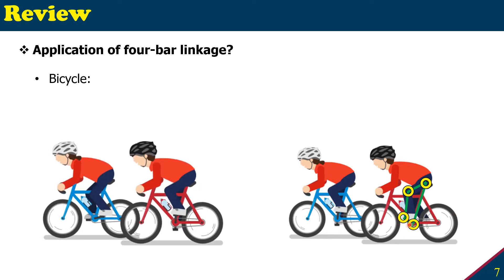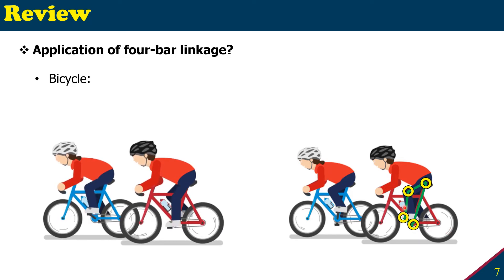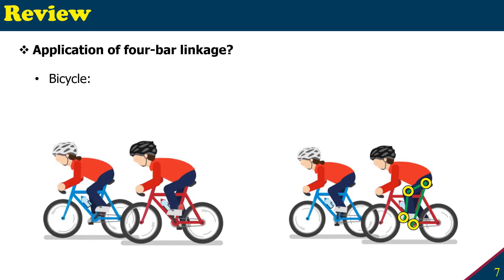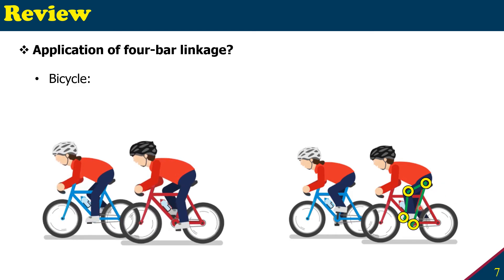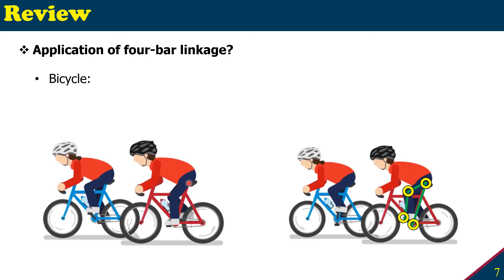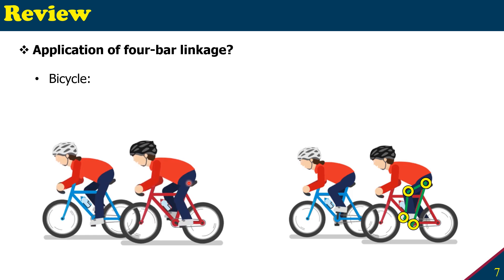From there, the leg acts as the coupler and you have an output link. Again, the frame here is not a visible bar — it's the invisible connection from the center to that point. So we can take that as the frame, completing the four-bar linkage for the bicycle pedaling mechanism.